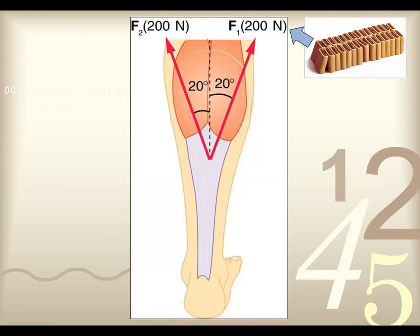This is looking at somebody doing plantar flexion at their ankle. As they do that, the force is pulled by the right and left parts of the calf muscle — the gastrocnemius — with vector forces pulling at about 20 degrees in both directions, about 200 newtons each. You may have a combined force pull of 400 newtons, but because they're pulling at different angles, mechanical advantages can create a plantar flexion force greater than 400 total newtons.